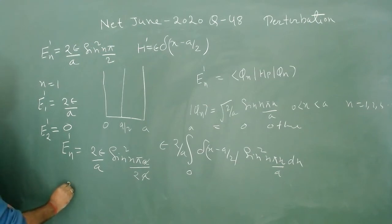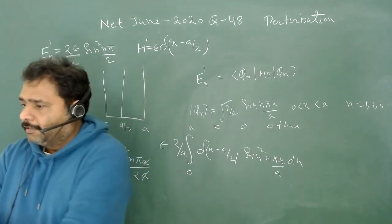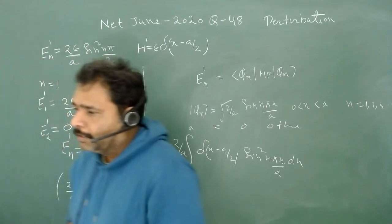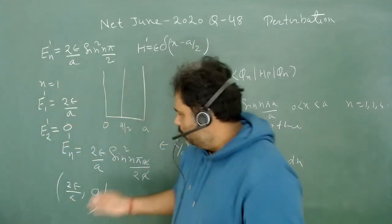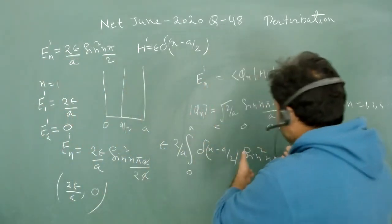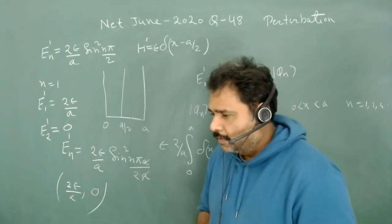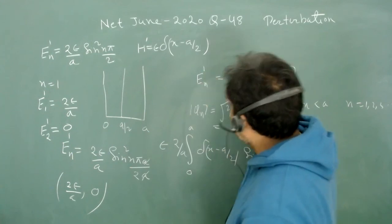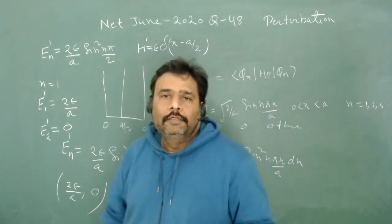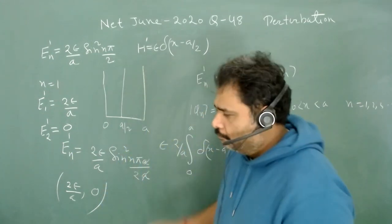For the ground state, the value is 2*epsilon/a. For the first excited state, the value is 0. This is our answer. It's quite simple - just how you do this integration and how you use this particular formula.